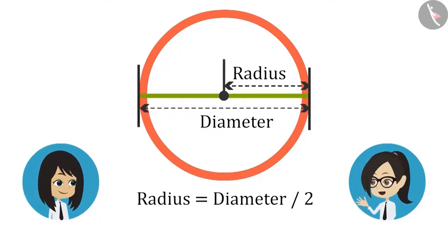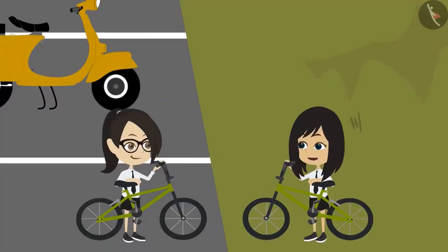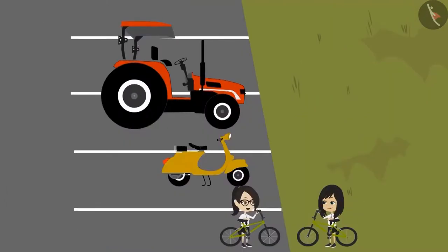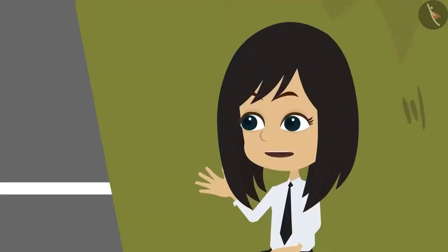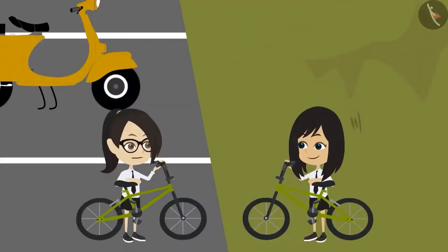It means diameter is equal to 2 times the radius. Let's measure something. Let's measure these 4 tires. Then we will tell sir. Which tire should we measure first? Let's measure the tire of our bicycle first.